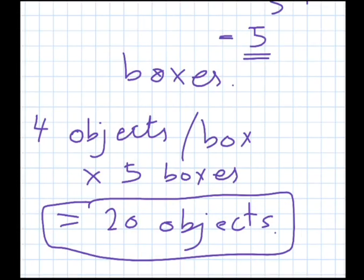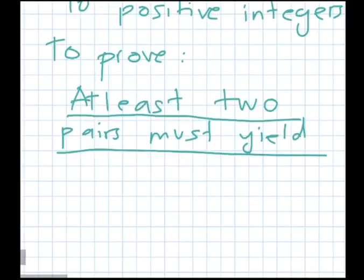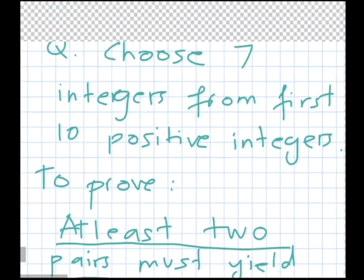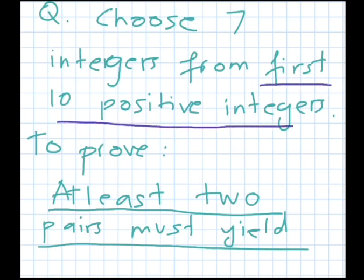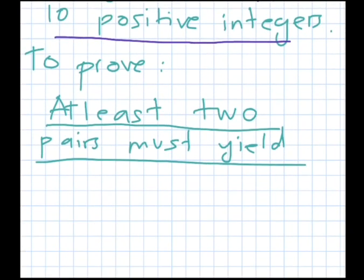This is the basic definition of the pigeonhole principle, but it is used in very different ways. Let's see an example in which it is elegantly applied. We have to choose seven integers from one to ten — that is, seven integers from the first ten positive integers.